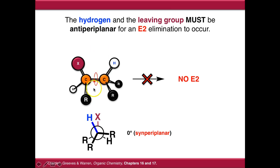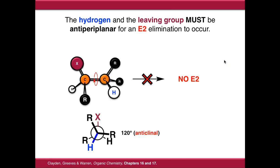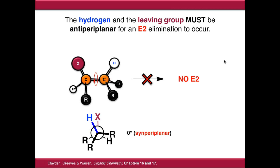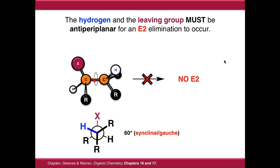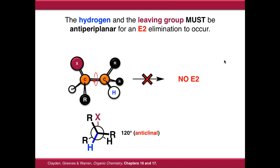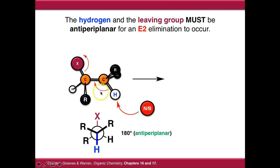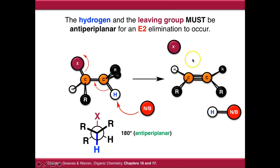We still have free rotation around the central carbon-carbon bond, so we can find a conformer which will undergo E2 elimination. Starting at zero degrees (synperiplanar), rotating through 60 degrees gives a gauche conformation, then 120 degrees gives anti-clinal, and eventually we reach the anti-periplanar conformation where the C-H bond is exactly 180 degrees from the C-X bond. Now all orbitals are overlapping: the C-X sigma star antibonding orbital overlaps with the C-H sigma bonding orbital, so the electrons are free to feed across and the reaction can occur, giving us our alkene, our base with a hydrogen attached, and leaving group X⁻.